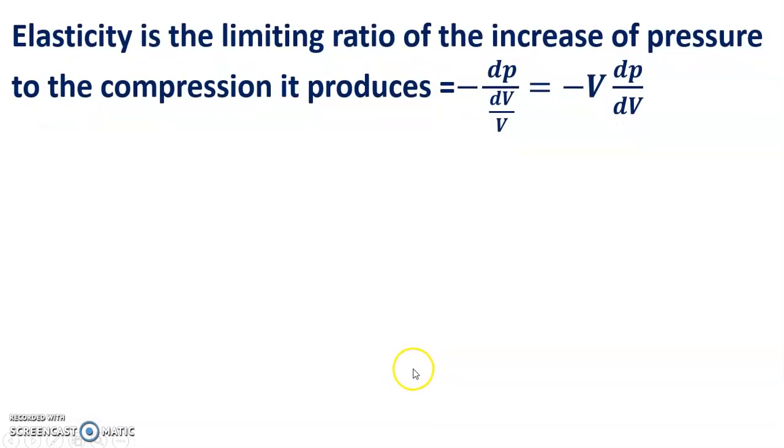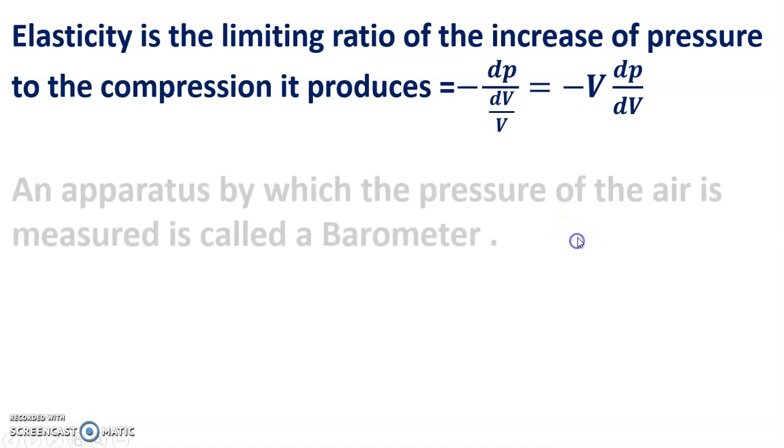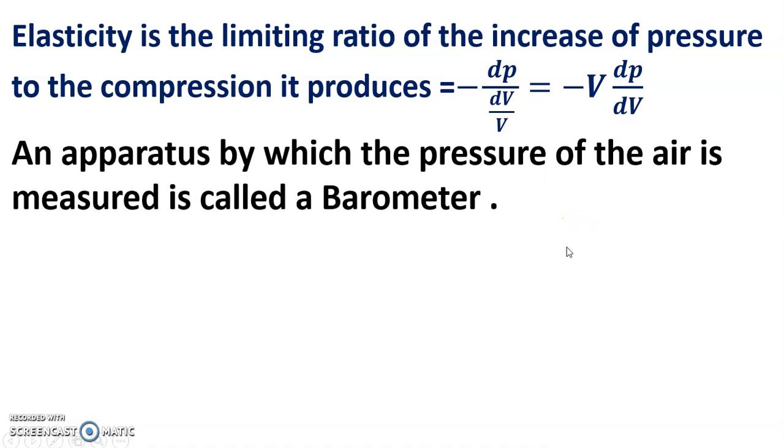Elasticity is the limiting ratio of the increase of pressure to the compression it produces: dp/(-dV/V) = -V(dp/dV). An apparatus by which the pressure of the air is measured is called a barometer. Internal energy of a gas: